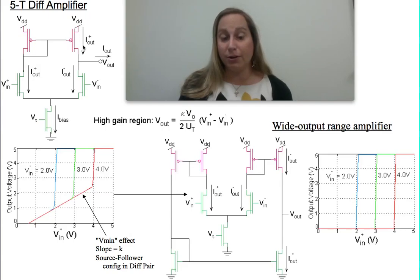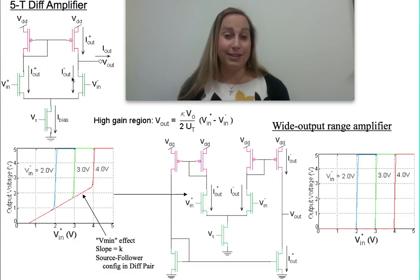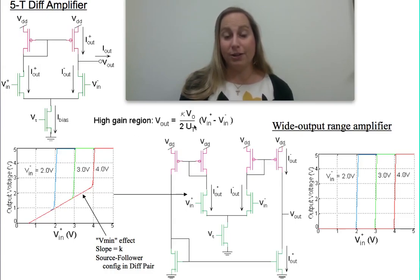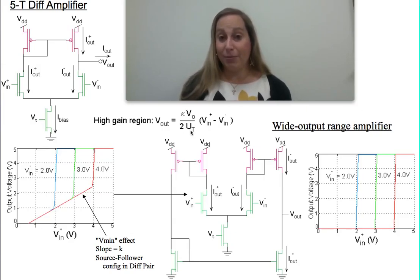It's still going to be this output current I plus and I minus together, and they're going to push up against the early effect. Just like any common source amplifier, I'm getting the same kind of high gain region. Not terribly surprising, the gain I would get would actually be kappa V0 over 2Ut, or kappa over 2 sigma times the differential voltage.